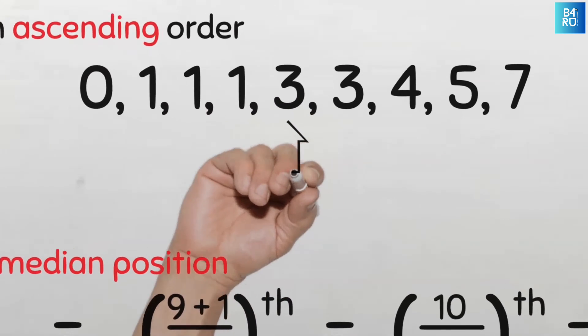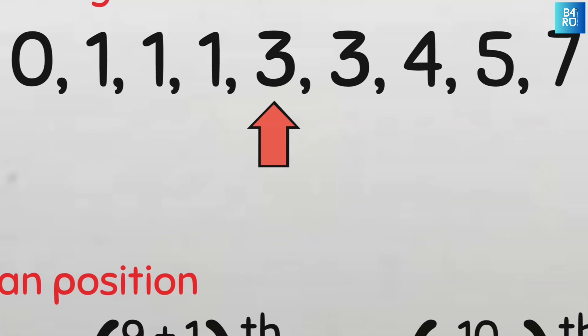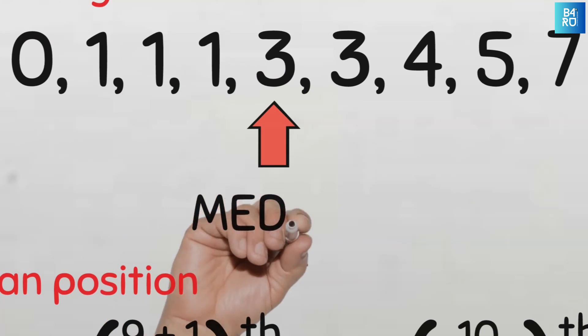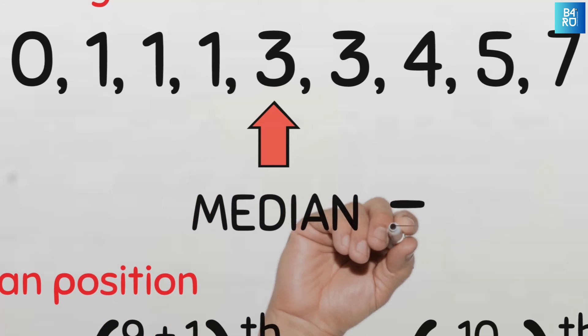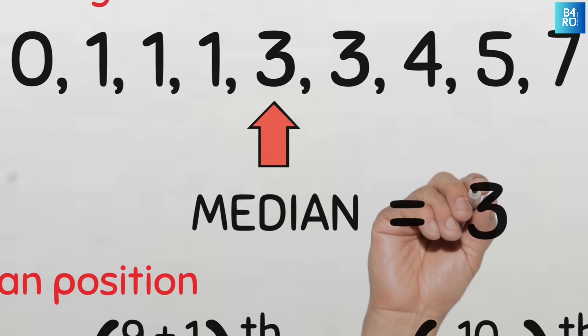Let's count: 1, 2, 3, 4, 5. The value at our fifth position — and the value of our median — is 3. Easy peasy.